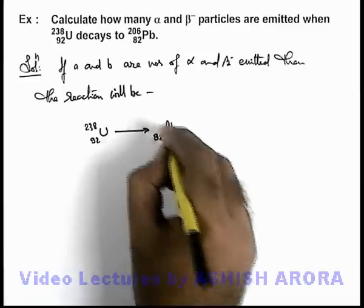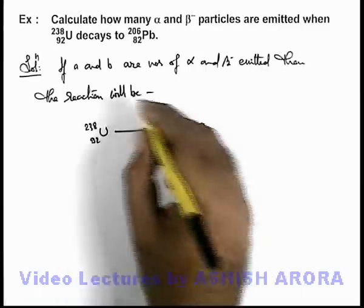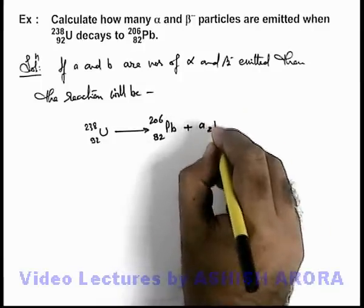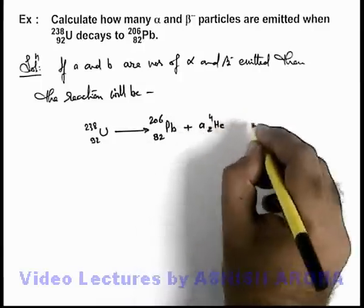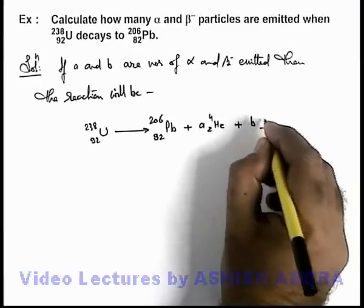82, 206, plus here a alpha particles are emitted which are 2 He 4, and b beta particles are emitted which are -1 e 0.